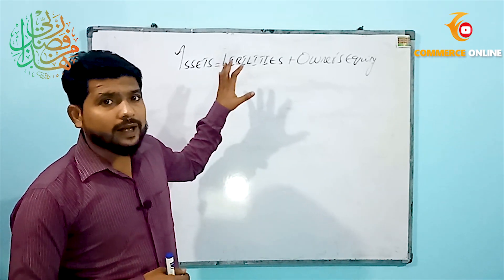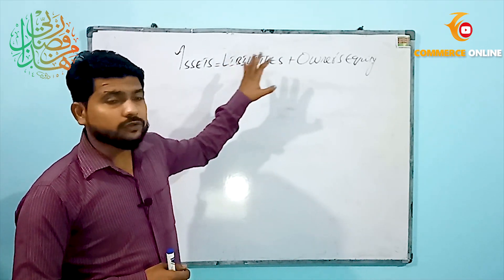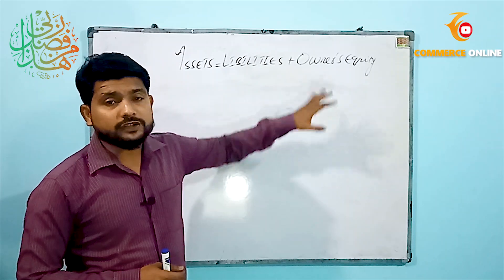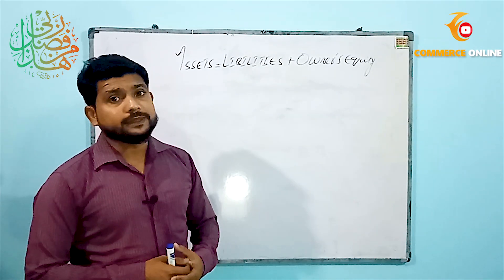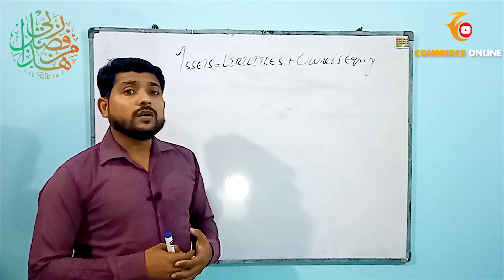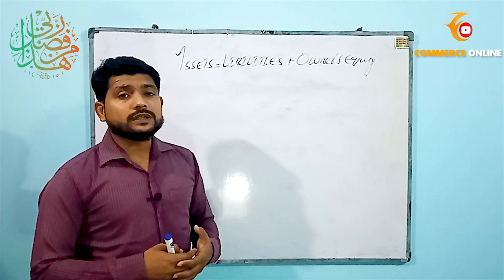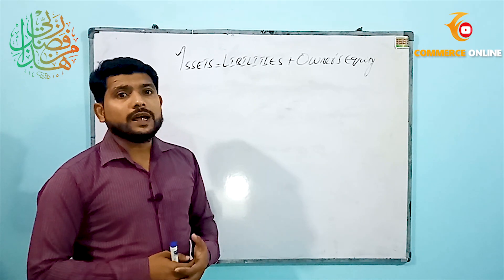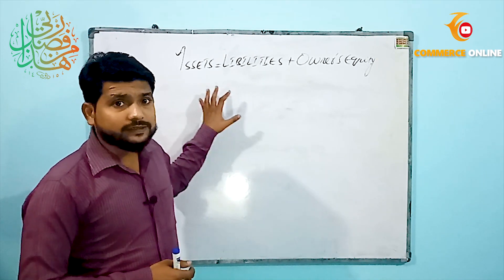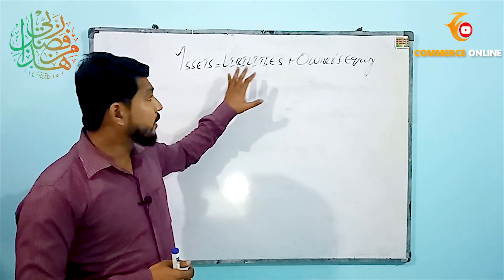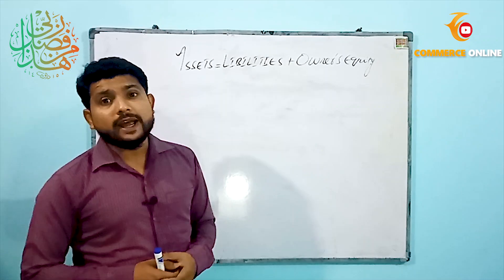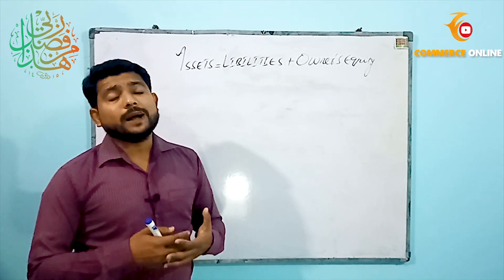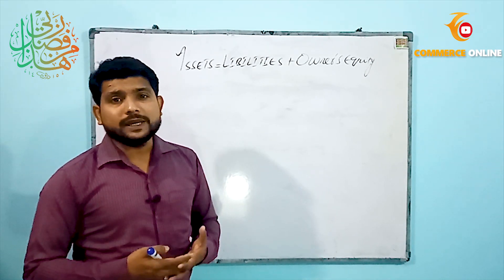Assets is equal to liabilities plus owner's equity or capital. Before going towards the numerical part, let me tell you what assets are, what liabilities are, and what owner's equity is, so that you can easily understand how to solve numericals of the accounting equation.